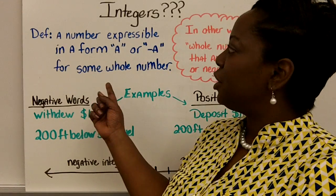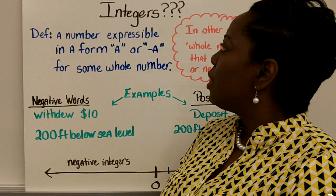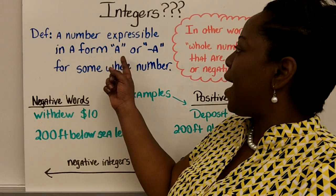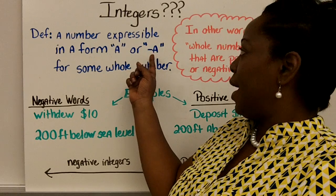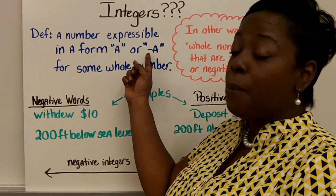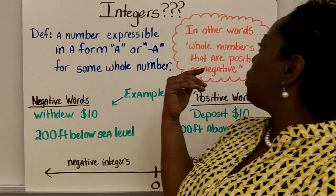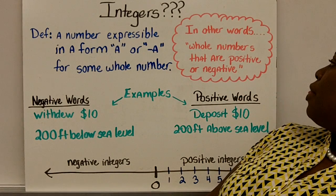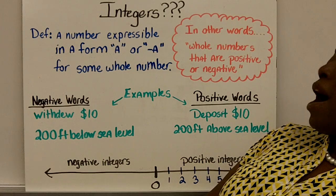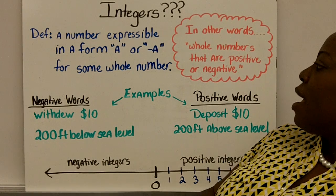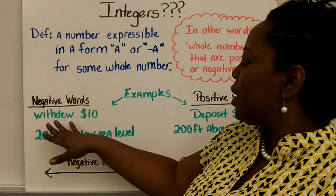First, the proper definition here says that it's a number that is expressible in the form of A or opposite of A. This negative sign means opposite of A for some whole number. So in other words, it's a whole number that is either going to be positive or negative.